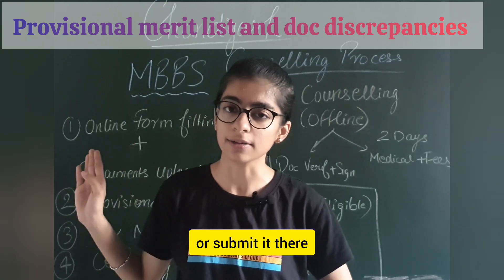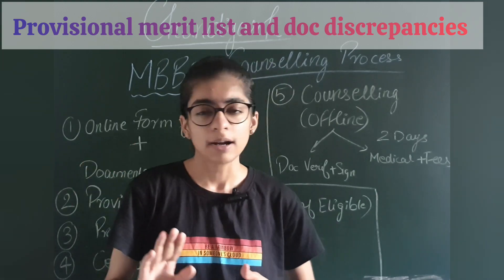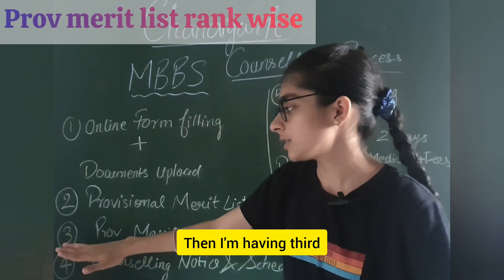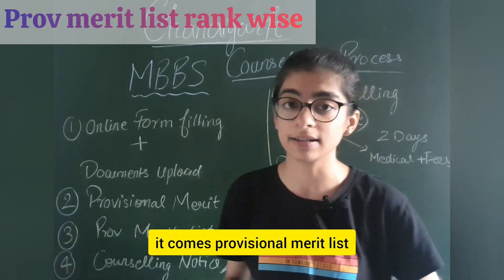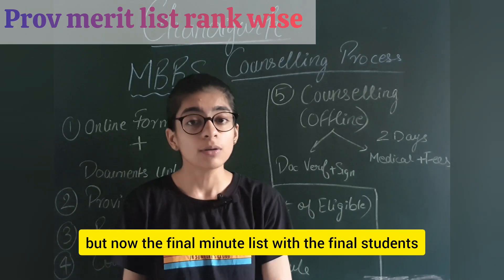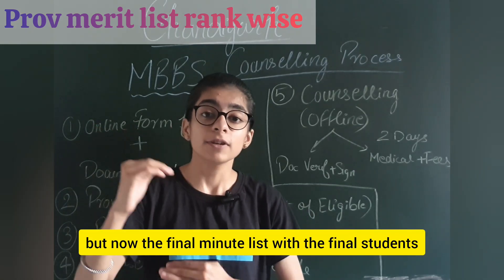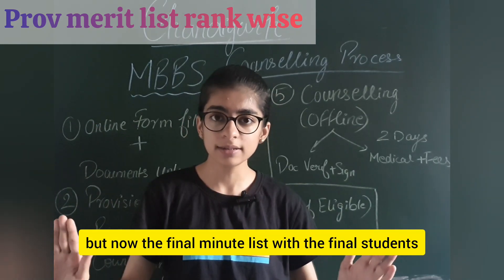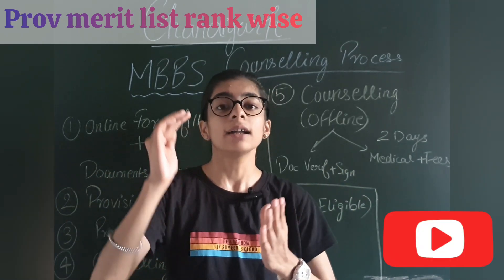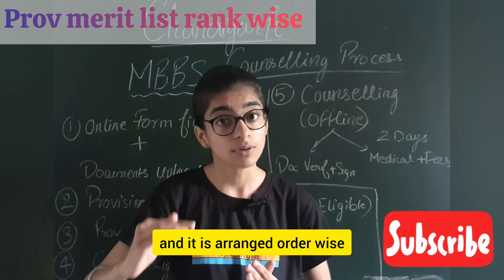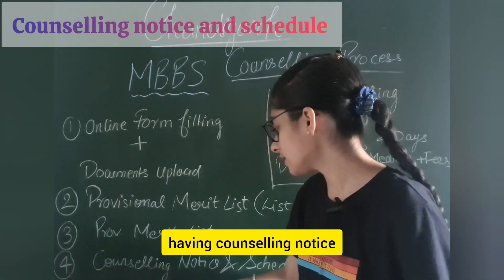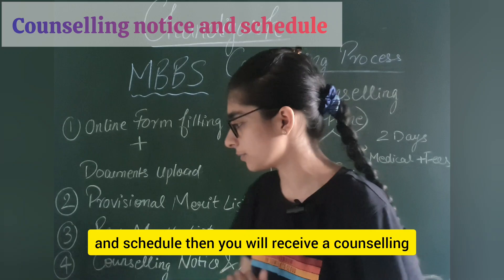My documents were clear. Third comes the provisional merit list — the name is the same but now it includes the final students who have corrected their documents, and it is arranged rank-wise.